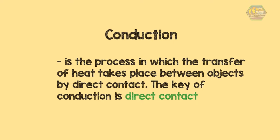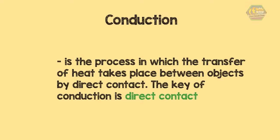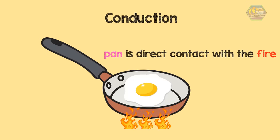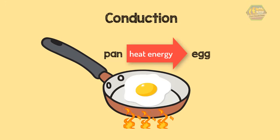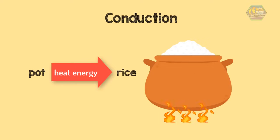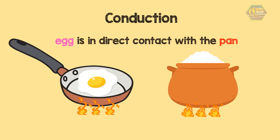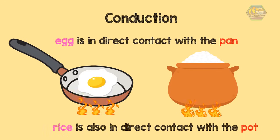Now let's discuss conduction. Conduction is the process in which the transfer of heat takes place between objects by direct contact — the key of conduction is direct contact. Notice that the pan is in direct contact with the fire. The energy from the pan to the egg is transferred by conduction, as well as the energy from the pot to the rice, since the egg is in direct contact with the pan and the rice is in direct contact with the pot.